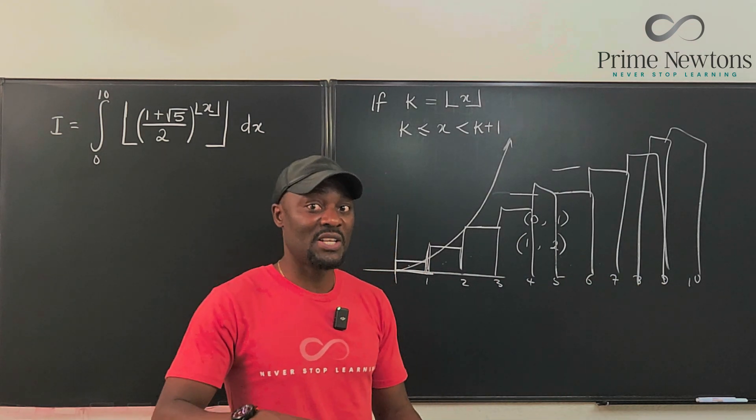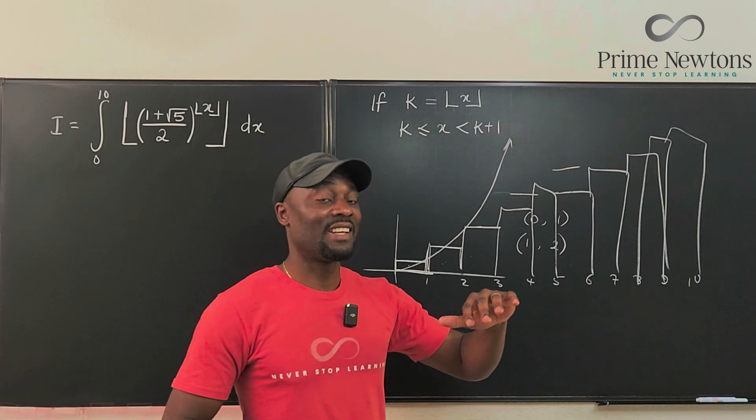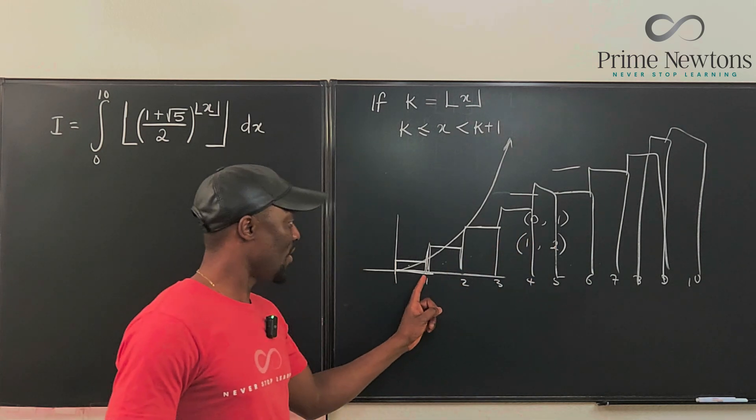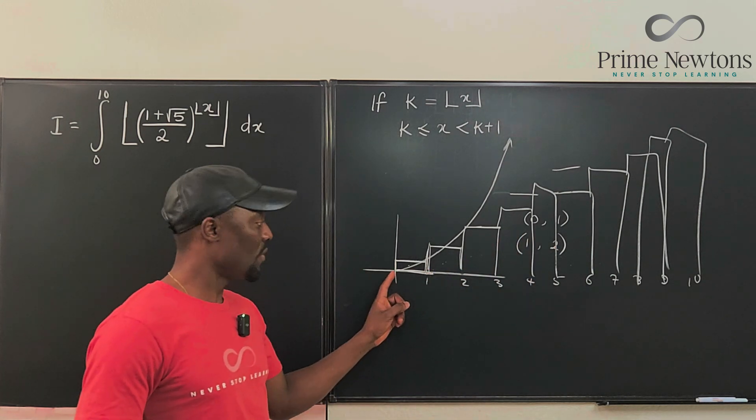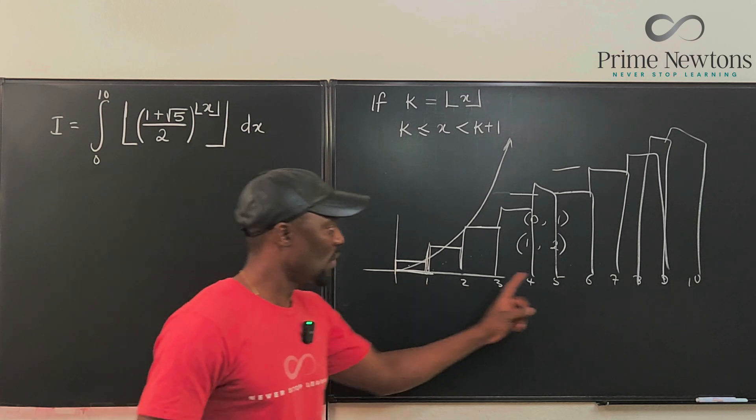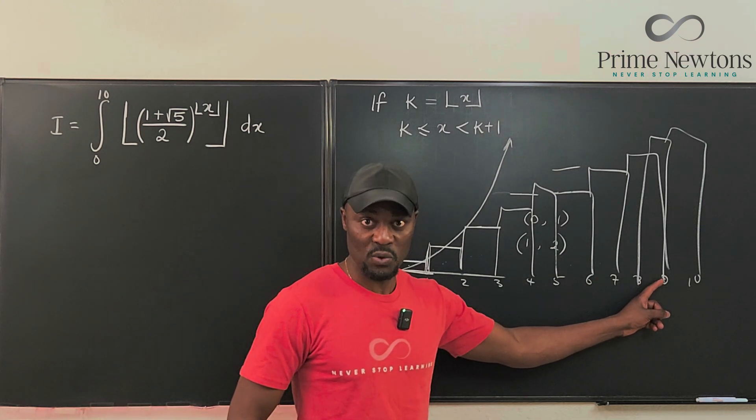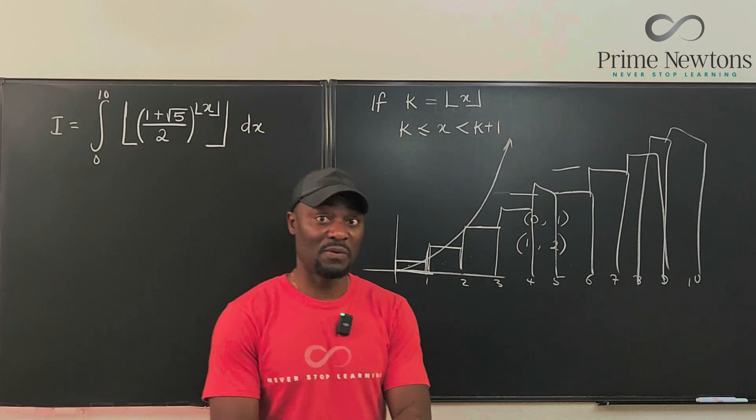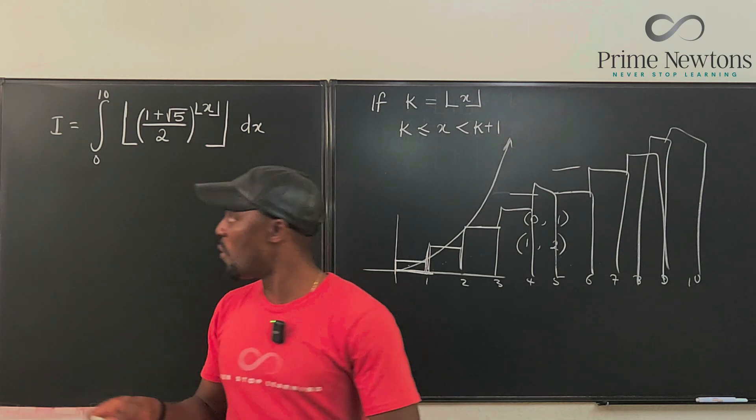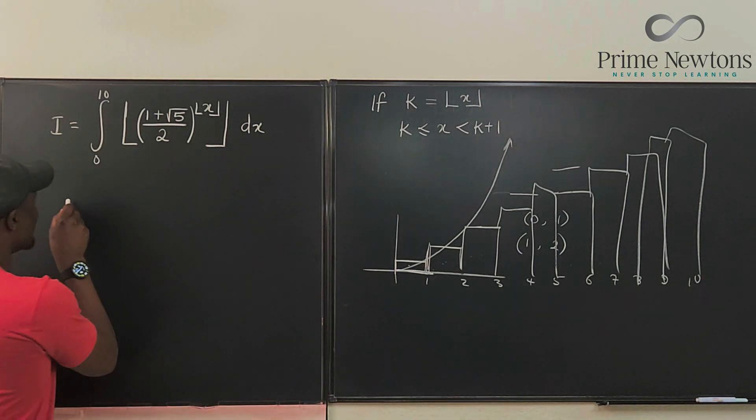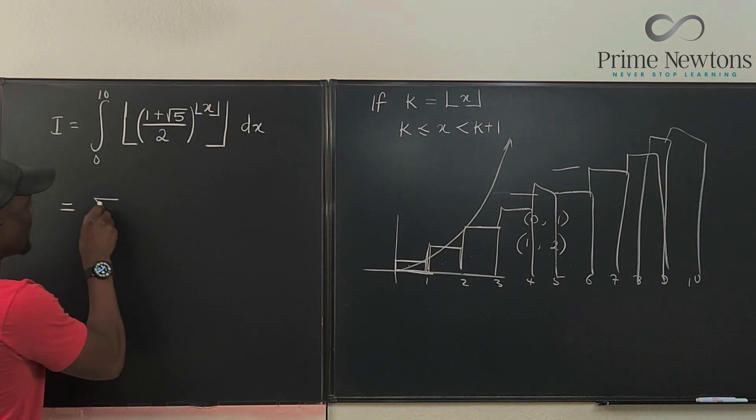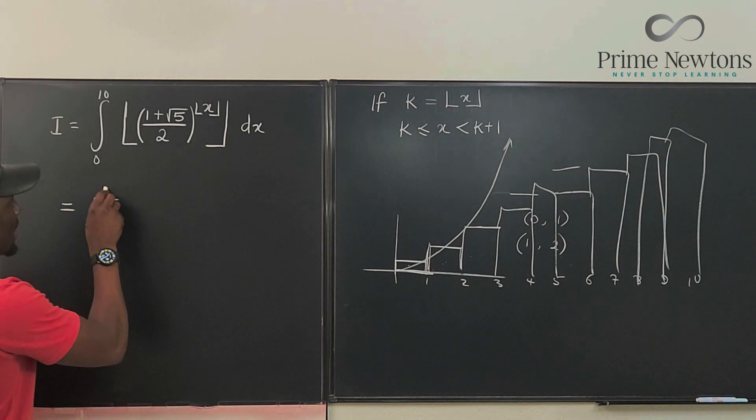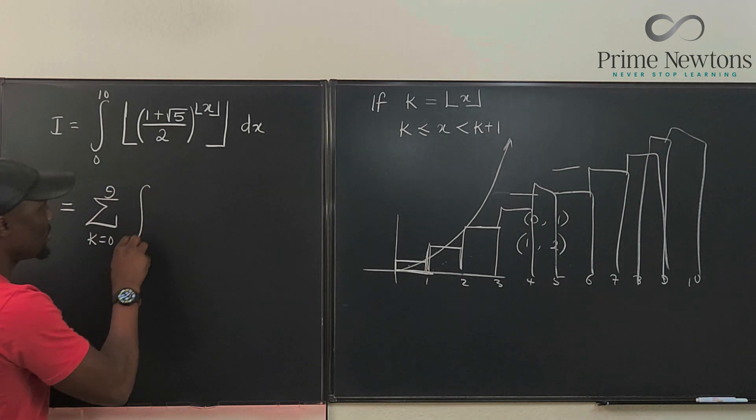But remember our first floor is not starting at one. We're starting our floor from zero. So the 10th floor is going to be what we call the ninth floor now. So we're going to be summing up 10 integrals starting from the floor zero to floor nine. So what we're going to have is this will be equal to the sum from K equals zero to nine of a bunch of integrals.